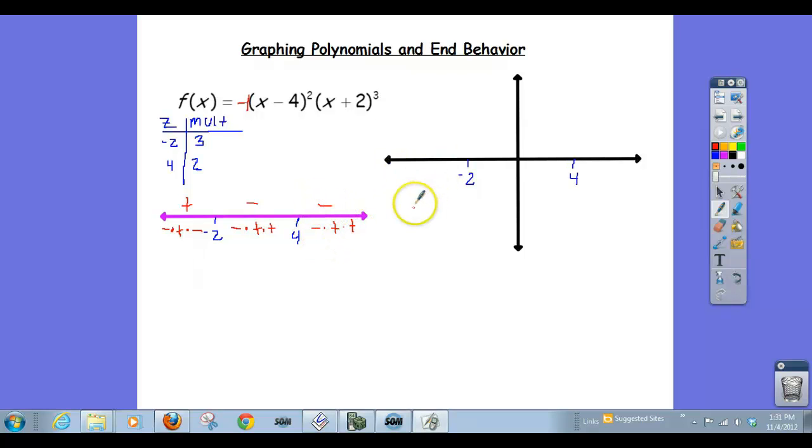And so if we sketch our graph, it looks like this. I've got the values of positive to the left of negative 2, and then it's a 0. And then it's 0 at 4, and then it's negative. So it was negative in between negative 2 and 4, and then it continues being negative. So there's our graph.